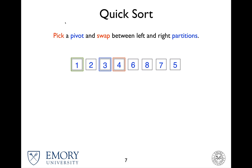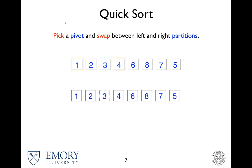Now, as you can see, by three, everything on the left is smaller and everything on the right is greater than the pivot value. So now the pivot is in place and we don't have to consider it again. There are now two partitions on which quicksort has to be performed separately.